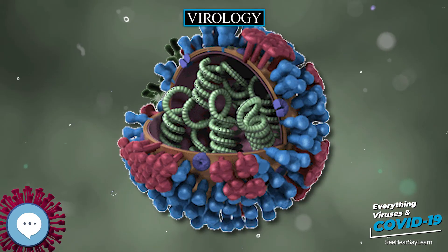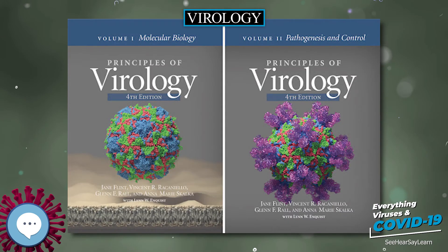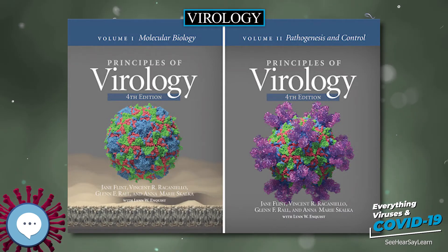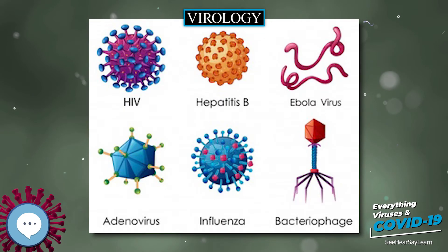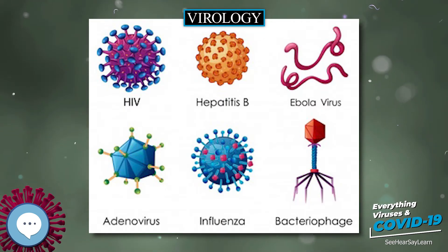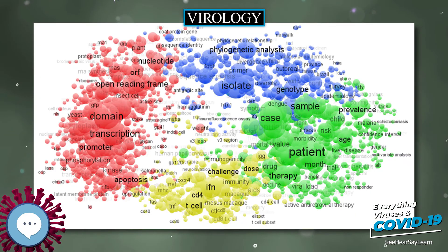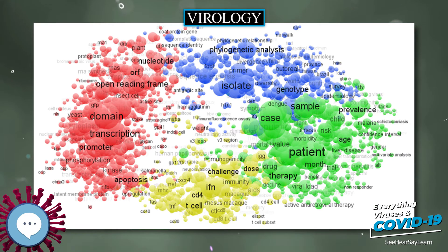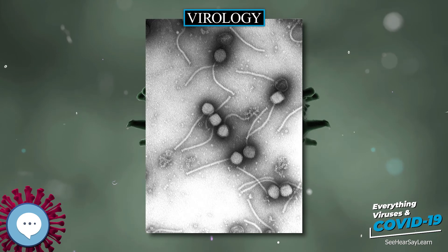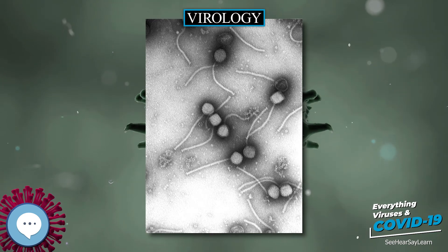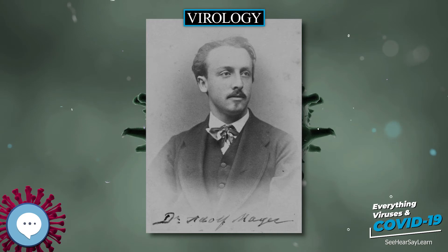Phage therapy, the use of bacteriophages to combat bacterial diseases, was a popular research topic before the advent of antibiotics and has recently seen renewed interest. Oncolytic viruses are viruses that preferably infect cancer cells. While early efforts to employ these viruses in the therapy of cancer failed, there have been reports in 2005 and 2006 of encouraging preliminary results.